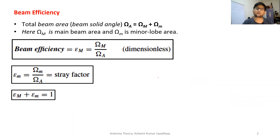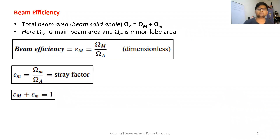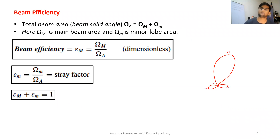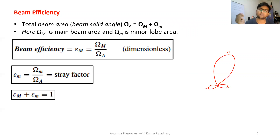We had studied about the beam angle or antenna beam angle, which was also called beam solid angle. There is a term connected to that, called beam efficiency. Suppose if you have any antenna which has a radiation pattern with a major lobe and minor lobes. If you are designing an antenna, you will only be looking at the direction where most of its power is being radiated — that direction is represented by its major lobe or main lobe.